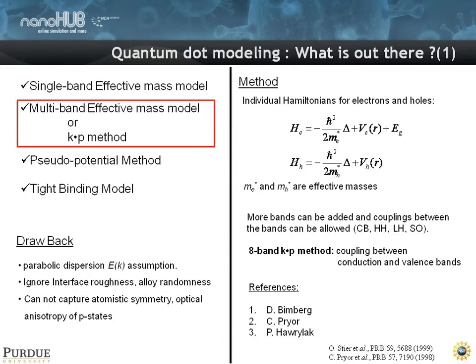And the drawback I think is that you really assume a parabolic dispersion. You ignore interface roughness or alloy randomness, and you cannot capture the atomic symmetry or the optical anisotropy of these materials. Again, fundamental insights we gained from Nemo 1D.